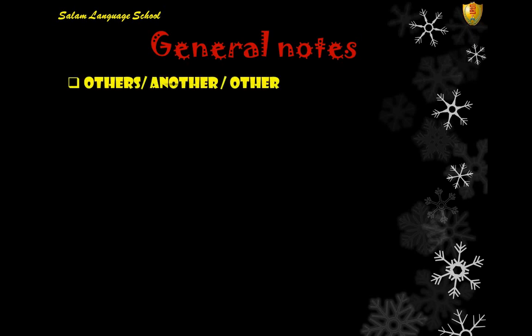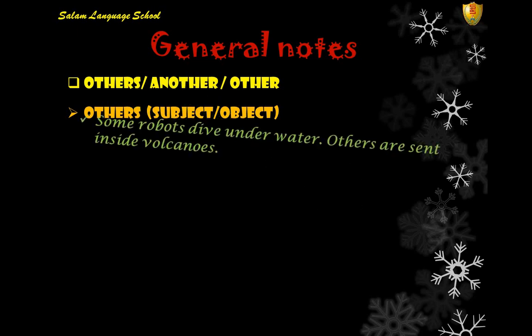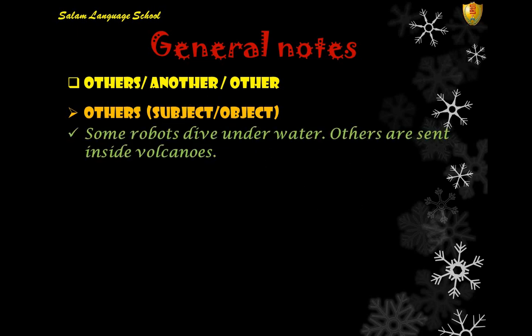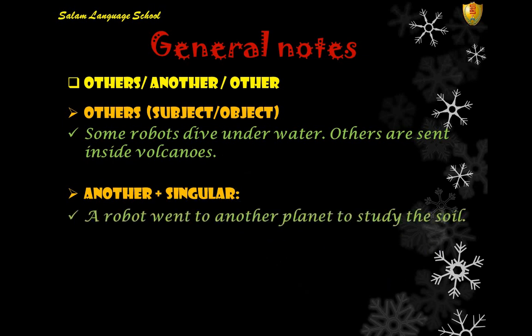First of all, we're going to check some general notes. We have three words: others, another, and other. The first word, 'others', we can use as a subject or as an object. For example: 'Some robots dive in the water, others are sent inside volcanoes' — we use the word here as a subject.